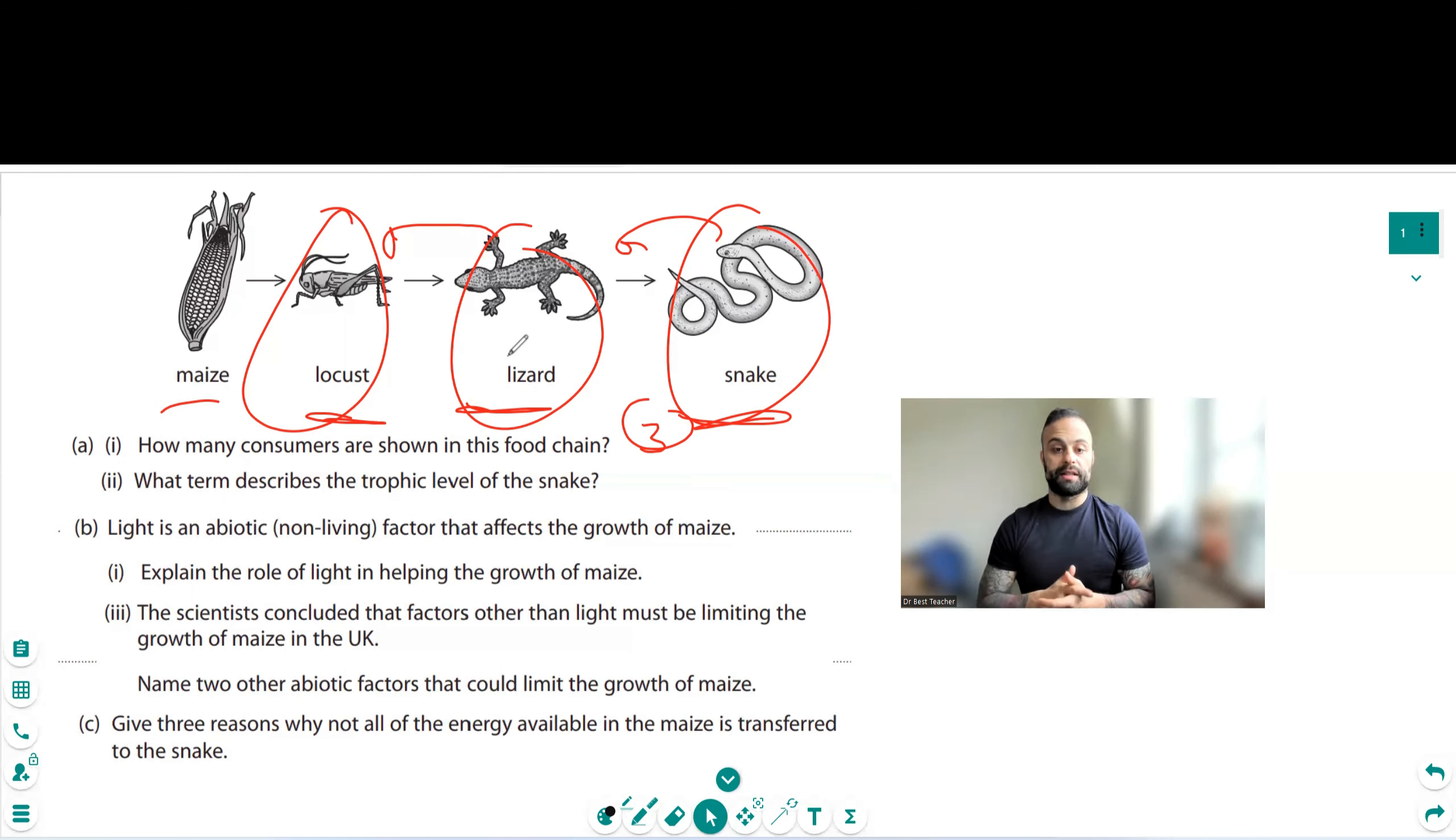So what are some other factors that could be affecting the growth of maize other than light? That could be the CO2 levels. So the more carbon dioxide you have, the more photosynthesis could occur. The other one might be the amount of temperature because that will affect the enzymes in the actual plant. If it gets too hot, the enzymes denature and they won't work properly and the plant will essentially die.